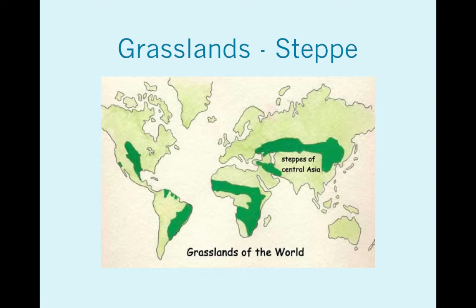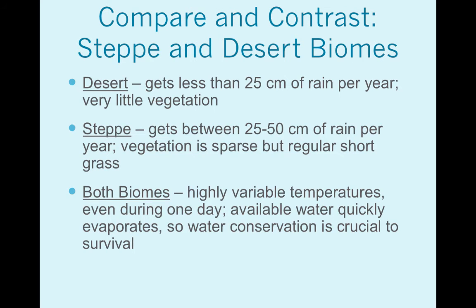Steppes are the coldest of the grasslands and have the shortest grass. There is a fine line between a desert area and a steppe area, but it makes a big difference in the vegetation. Just realize that when you have less than a certain amount of water, that's where you have the desert — very little can survive. Get just above that threshold and now you have regular short grass all over the place. Another feature of grasslands: very few if any trees, and trees only occur in the savannah. The steppe and the prairie have no trees.